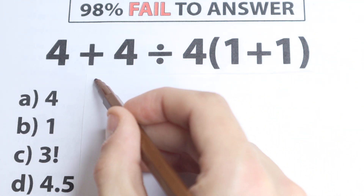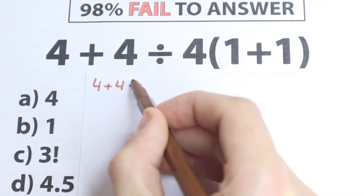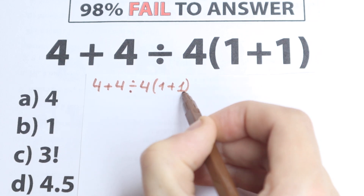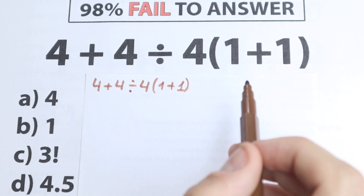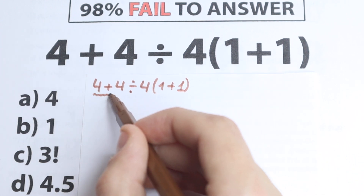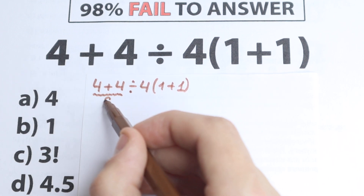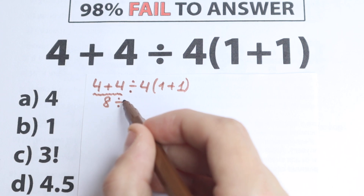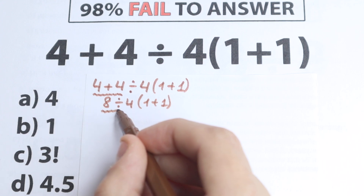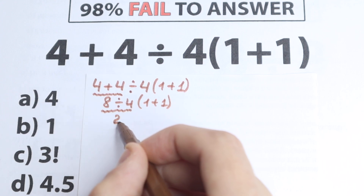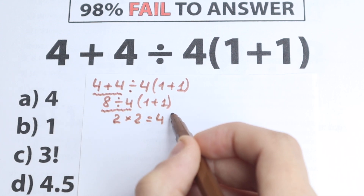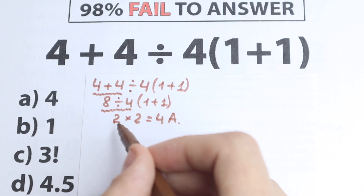Let me start with this solution. We have 4 plus 4, divided by 4, and in parentheses 1 plus 1. For those who don't know about order of operations, this type of student solves it from left to right: 4 plus 4 equals 8, then 8 divided by 4 equals 2, and with the parentheses 1 plus 1 equals 2, so 2 times 2 equals 4. A lot of students go wrong and solve it this way.